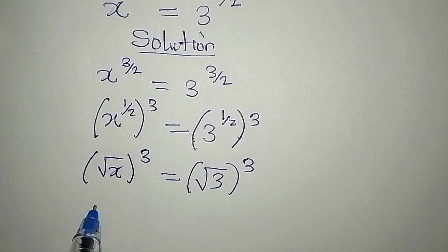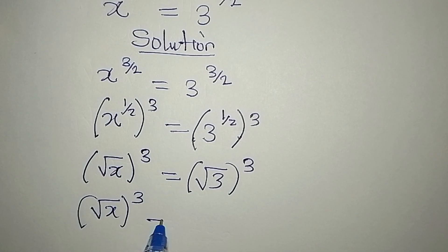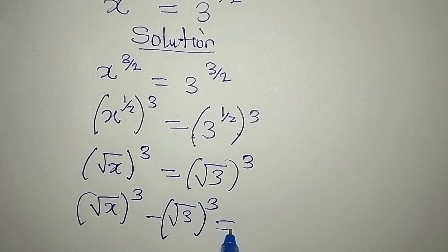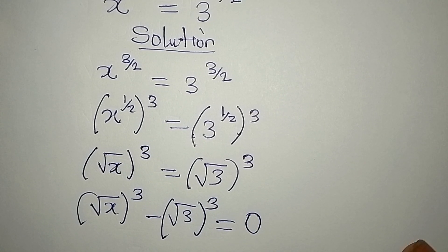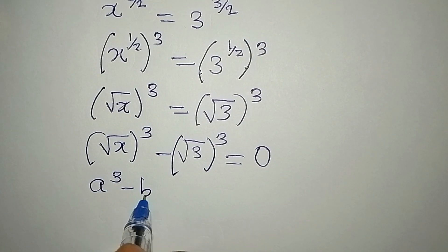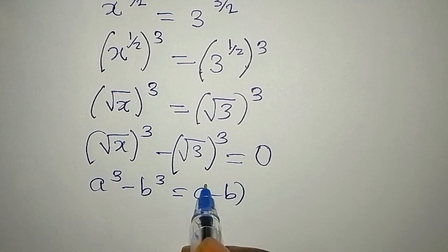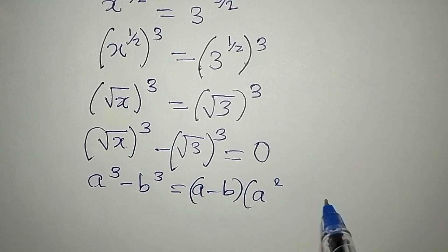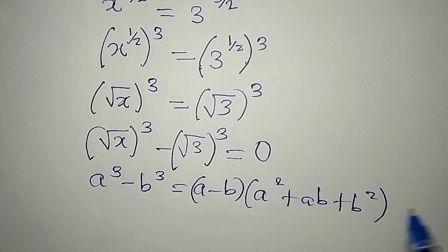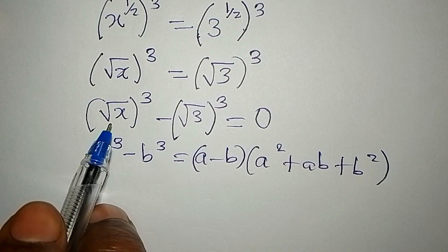Now we bring the square root of 3 to the power of 3 to the left, so we have square root of x to the power of 3 minus square root of 3 to the power of 3, equal to zero. Remember that if you have a³ minus b³, this gives a minus b, into a squared plus ab plus b squared.